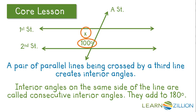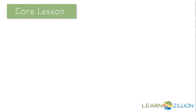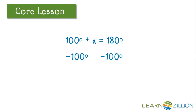This tells us that they add to 180 degrees. Since we know they add to 180 degrees, we can set up the equation: 100 degrees plus X equals 180 degrees. Subtracting 100 degrees from both sides gives us X equals 80 degrees. So the measure of angle X is 80 degrees because we used consecutive interior angles.